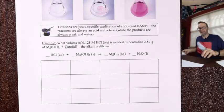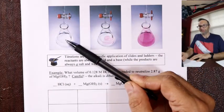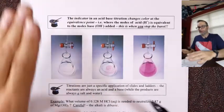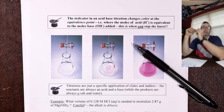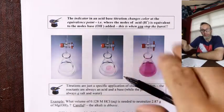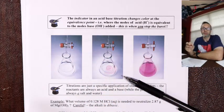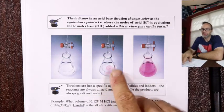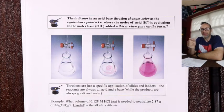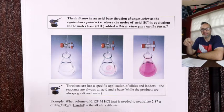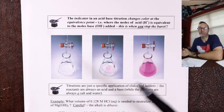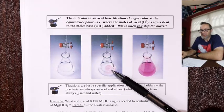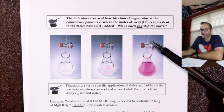As you approach the endpoint, when a drop of NaOH hits the solution you get flashes of color. Swirl and it goes away. This tells you to slow down — adjust the stopcock to one drop at a time. Drop goes in, flash, swirl, goes away. Next drop — flash stays — stop. You can get to within one drop, which is one-fifteenth of a milliliter. So titrations are accurate to a fifteenth of a milliliter if done correctly. Record the volume of sodium hydroxide to the nearest 15th of a milliliter.